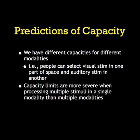The predictions of the capacity model are that we have different capacities for different modalities. You can select visual stimuli in one part of space and auditory stimuli in another and they won't really conflict. You can be doing a visual attention task as well as an auditory attention task at the same time. However, when they are in the same modality, your capacity limits will really hurt you. Capacity limits are more severe when processing multiple stimuli in a single modality rather than across multiple modalities.